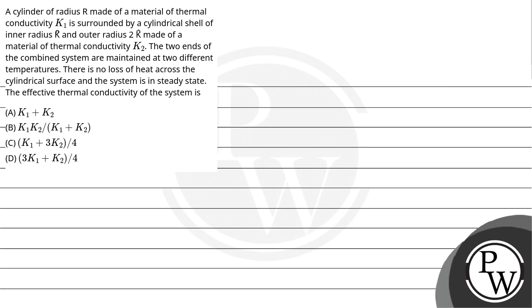Let's read the question. A cylinder of radius R made of a material of thermal conductivity K1 is surrounded by a cylindrical shell of inner radius R and outer radius 2R made of a material of thermal conductivity K2.